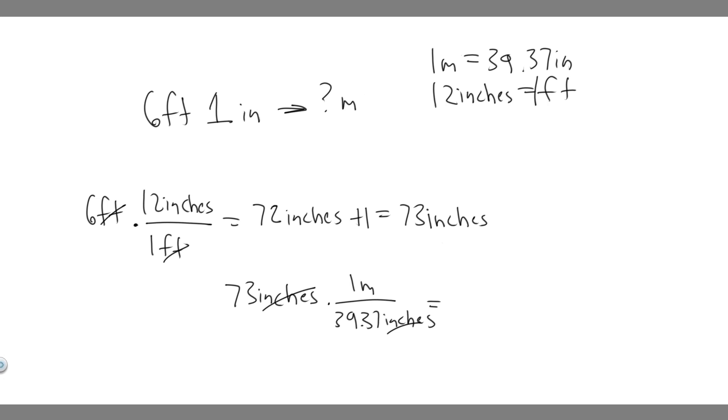So 73 divided by 39.37. If you go ahead and do that, what you're going to get is it equals 1.854. So 1.854. And then this is going to be in meters because that's what we have. And that's what they want us to do. So this is going to be their height in meters. So 1.854 meters. That's going to be your answer. And hopefully you found this useful.